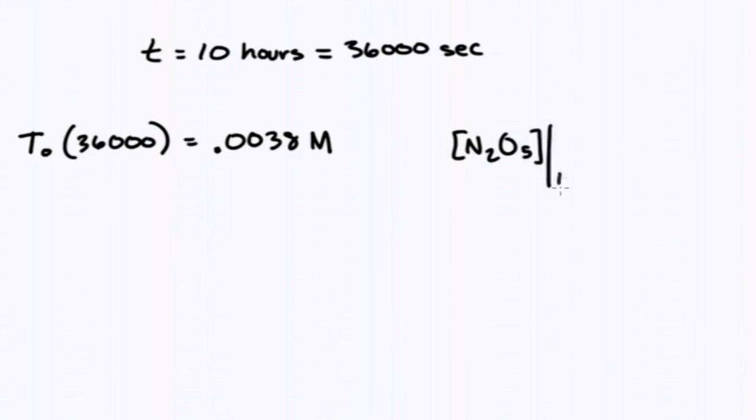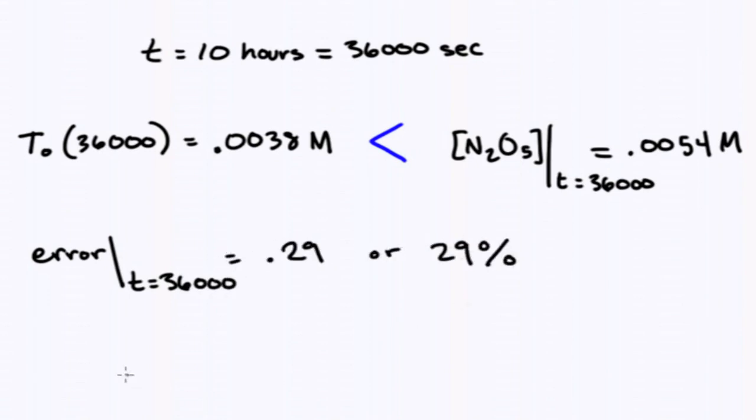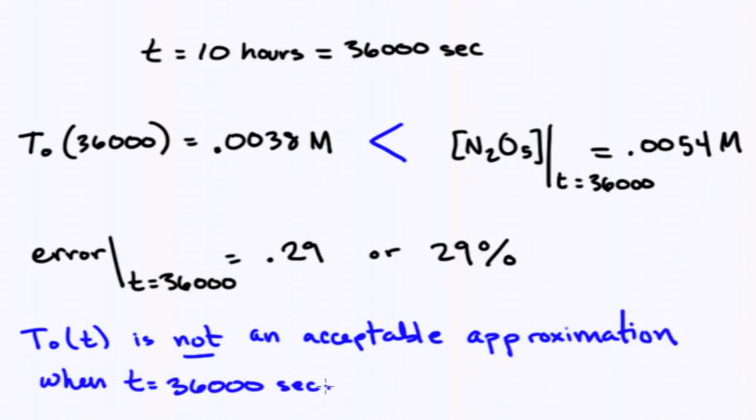The linear approximation of the concentration after 10 hours at room temperature is T_0 of 36,000 seconds equal to 0.0038 molar. The exact solution of the concentration after 10 hours is 0.0054 molar. Comparing these two solutions, we see that the linear approximation is an underestimate, as we would expect. The error is 0.29 or 29%. So a linear approximation is definitely not acceptable for this time range.